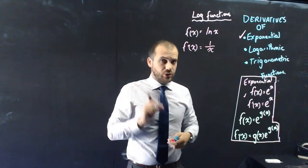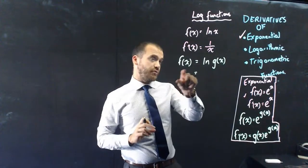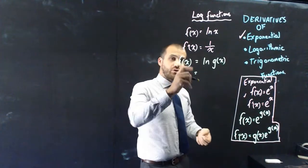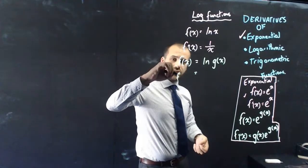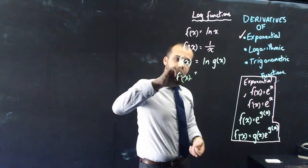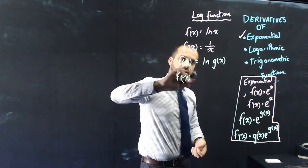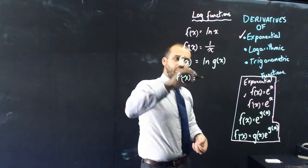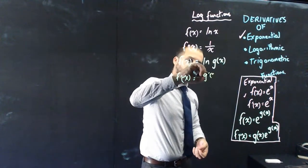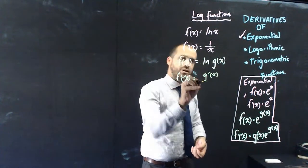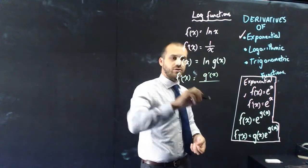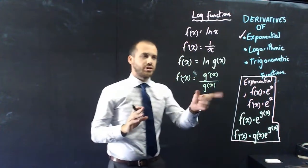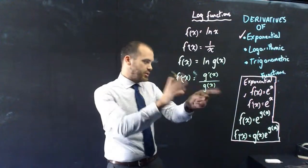Let's do the slightly more complicated version. If f of x equals ln g of x, the derivative f dash of x is going to be g dash of x divided by g of x - the derivative of the inside function divided by the original inside function. So there's our rule.